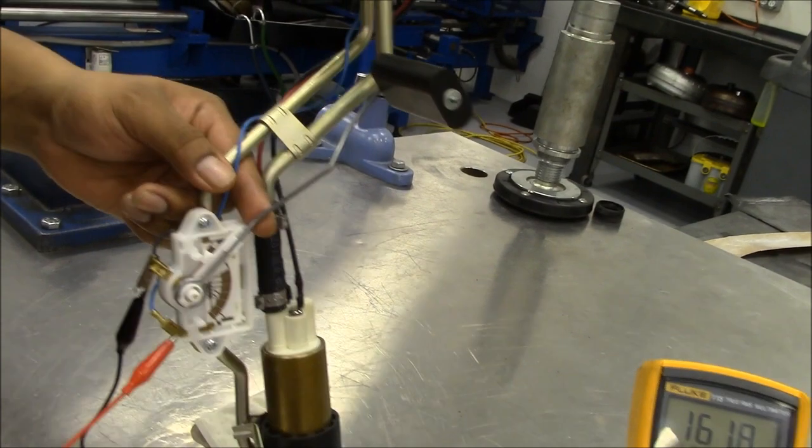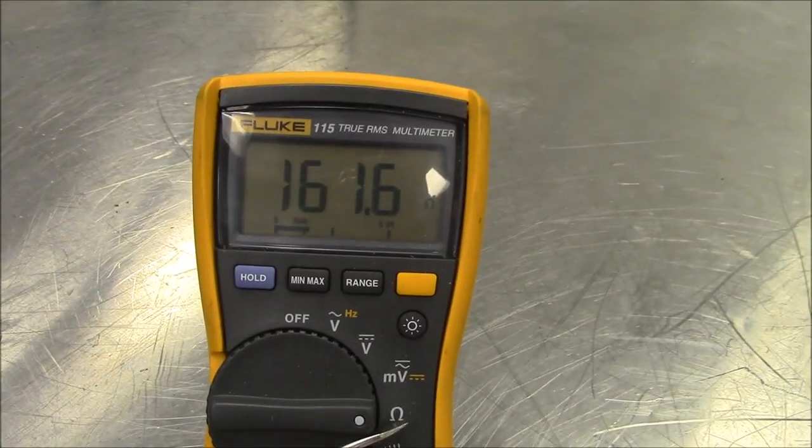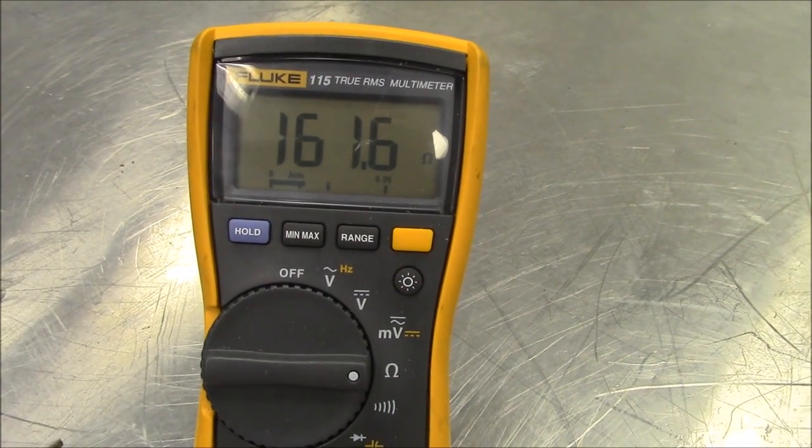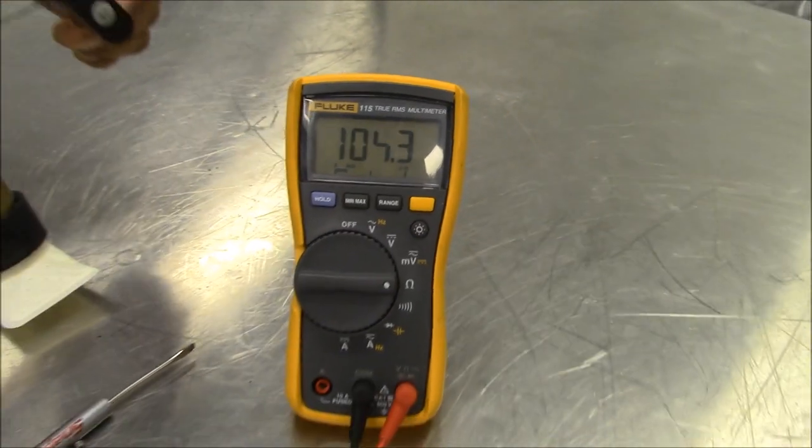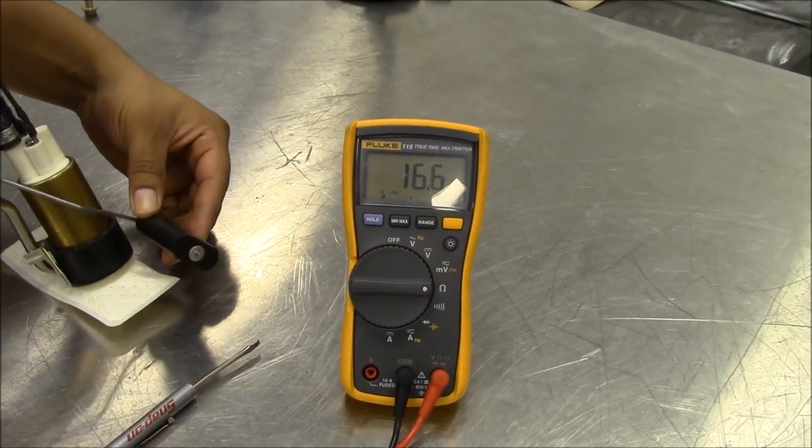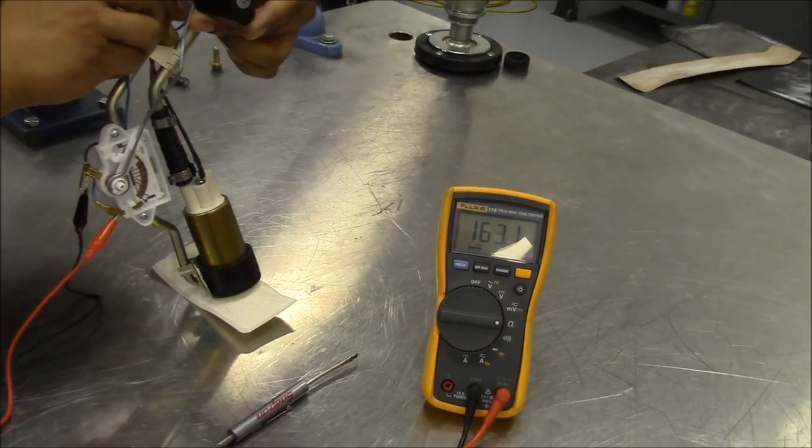When testing this component, make sure that you're on the ohm setting to check for resistance. As the floater goes down, the resistance value will also go down and vice versa. As the floater goes up, imitating full fuel level, the resistance value will go up.